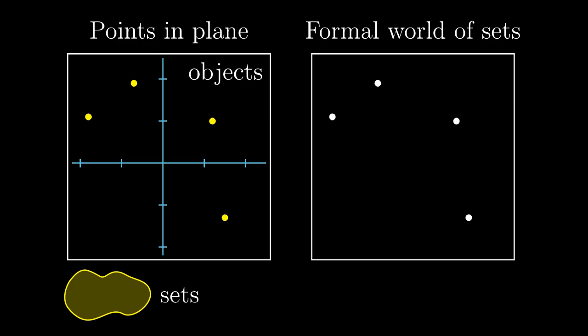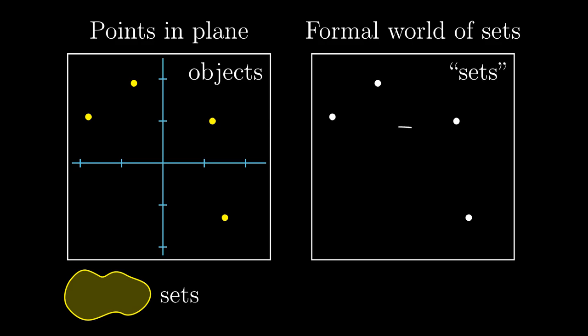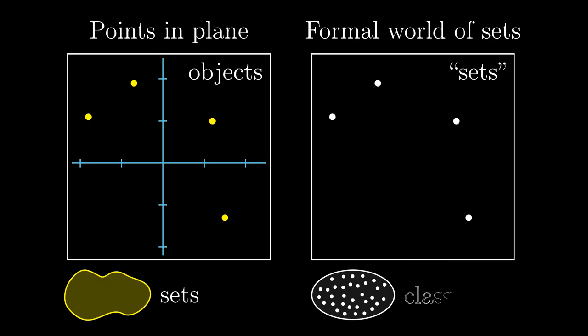However, the objects of formal set theory will be for good reasons called sets. That means that we need another name for collections of sets with some property. We call them classes.